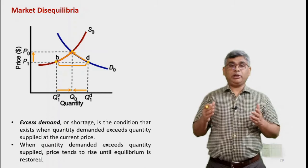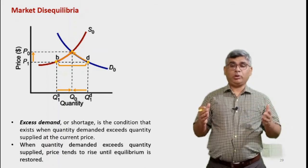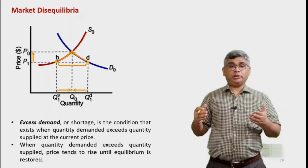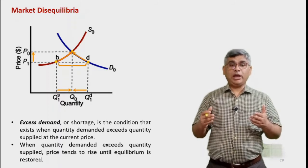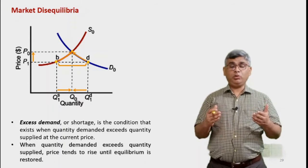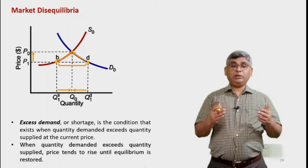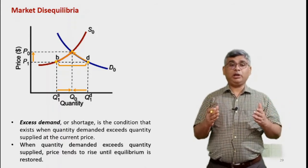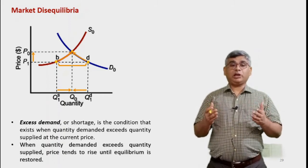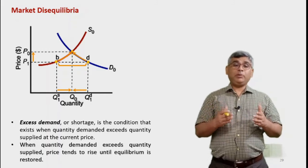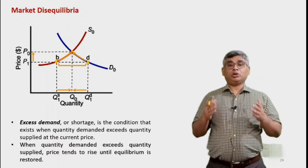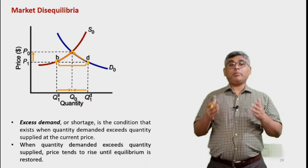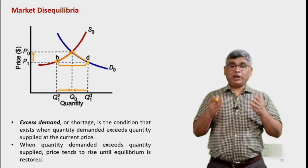When demand is higher and quantity supplied is lower, the law of supply and demand states the price will go up. The demand will move along the curve up to point P0. As price rises, suppliers tend to supply more. The market settles again at P0, with demand falling from Q1D to Q0 and supply increasing from Q1S to Q0. This is how equilibrium is automatically restored.